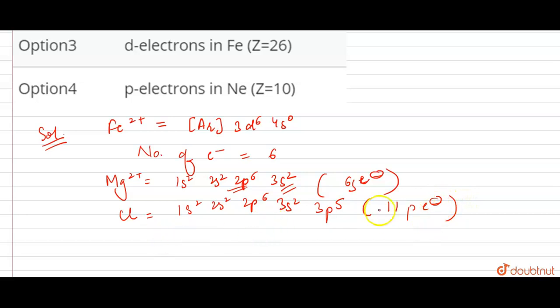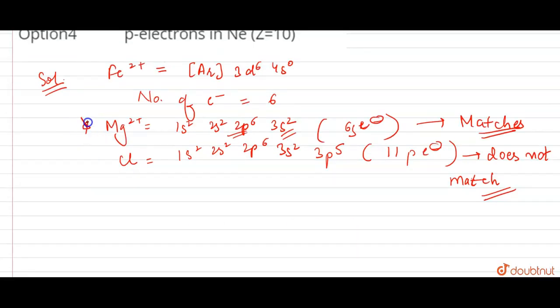Now let's see what is given in the first option. Magnesium: 2S2 2P6 and 3S2, right? How many electrons in the valence shell? 6 s electrons in the last shell.